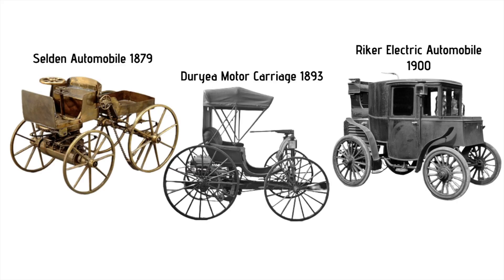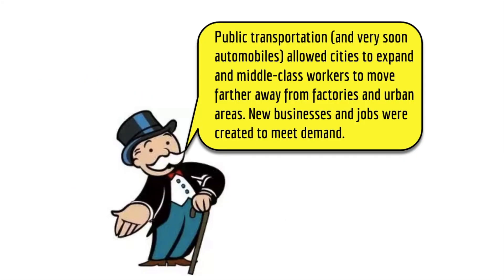By the end of the 1800s and into the early 1900s, we see the automobile developing as well, with earlier models from 1879 up to 1900. The automobile slowly but surely emerges as a mode of transportation, and by the 1920s it really takes off and becomes something almost every family has. Public transportation and automobiles allow cities to expand. Middle-class workers with good wages can afford transportation and move a couple miles away from work, and we see entire neighborhoods develop outside the city in these suburban areas.